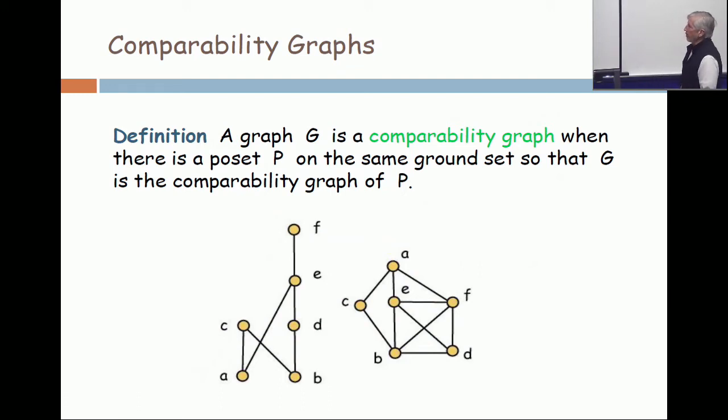And a second problem. We've talked about comparability graphs. Here's a poset on the left, it's the same poset of course, and on the right is its comparability graph. Same ground set, two vertices are adjacent in the graph when they're comparable in the poset. Is the notion of a comparability graph clear?